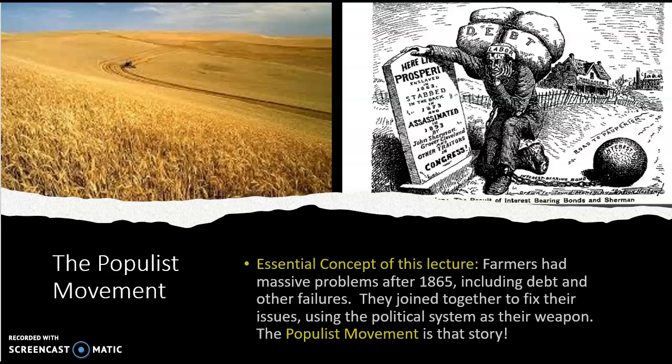The essential concept of this lecture is about the farmers. This takes place in the same time frame we've been studying for Unit 1. Post-1865, farmers start to have massive problems, the biggest of which is all roads sort of lead to issues with debt. They're going broke. Farms are getting foreclosed.